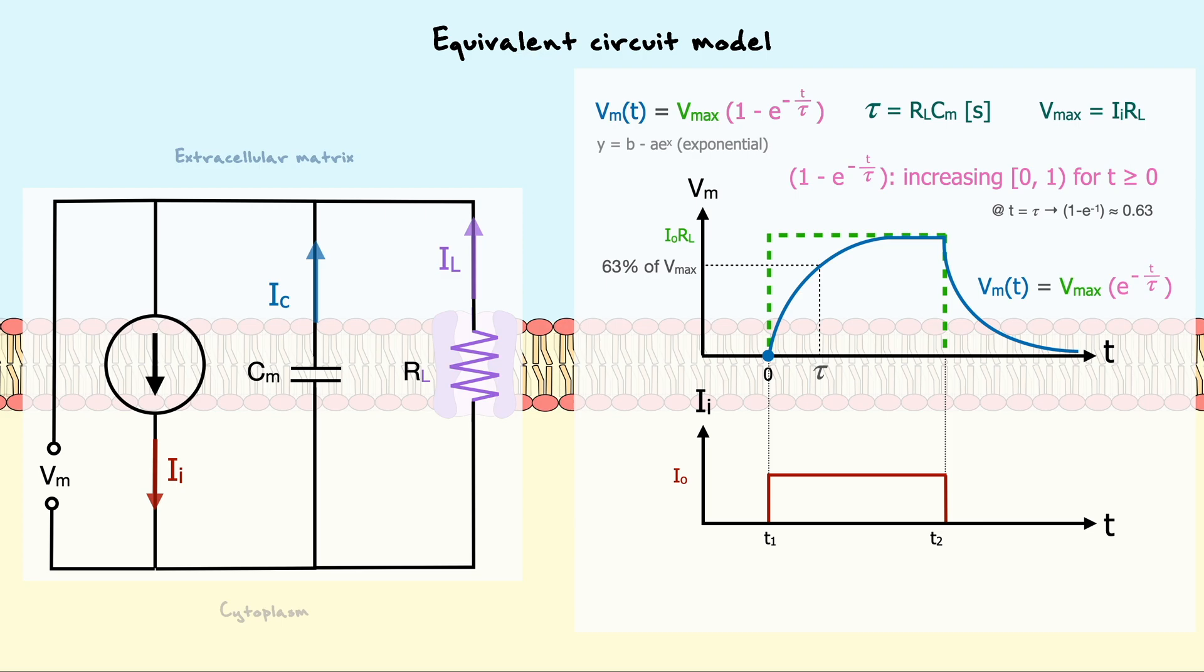Now to understand more in depth why the voltage exponentially grows and exponentially decays, let's consider how the currents from the capacitor and the resistor operate in our model. When the current is injected in the cell, it first goes to the capacitor to charge it because the capacitor imposes the least amount of resistance to the current. But as it gets charged, the current going to the capacitor progressively diminishes because the capacitor is getting full and thus the current feels more resistance. Simultaneously, the current going through the resistor progressively increases since it now becomes the path with least resistance.